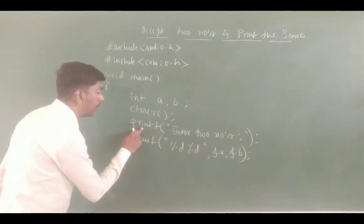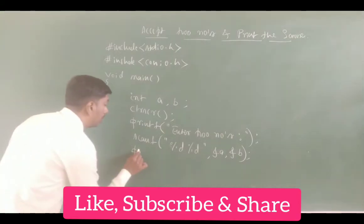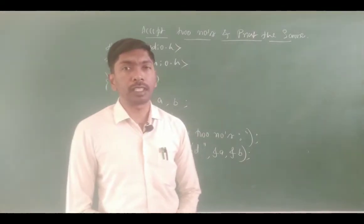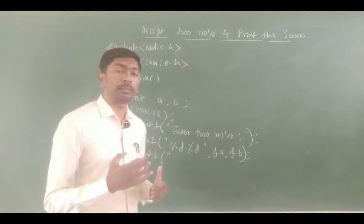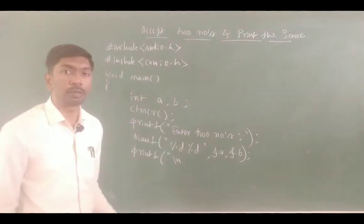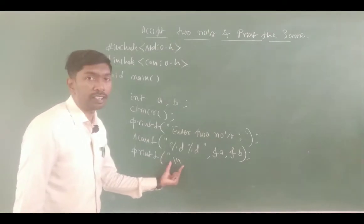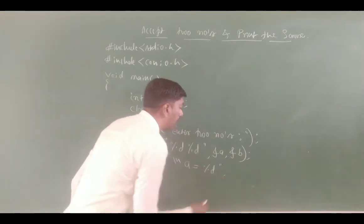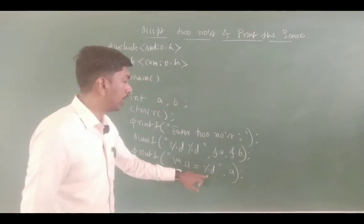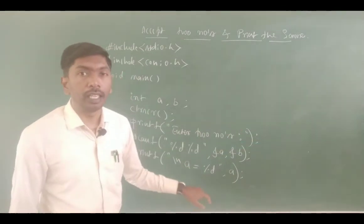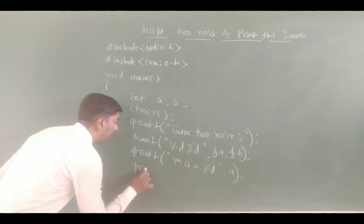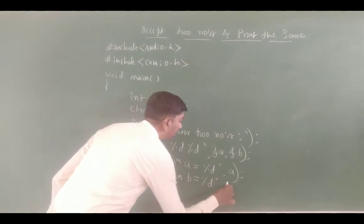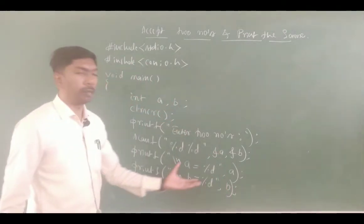So printf — here we have to use escape sequences. I need to use \n for next line control. Then: "\na is equal to %d", a — to display the value of a. Next printf: "\nb is equal to %d", b — to display the value of b.